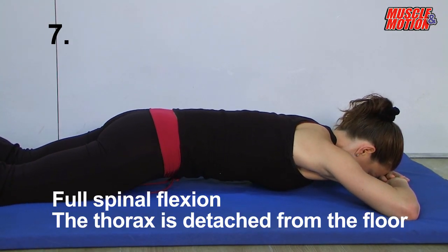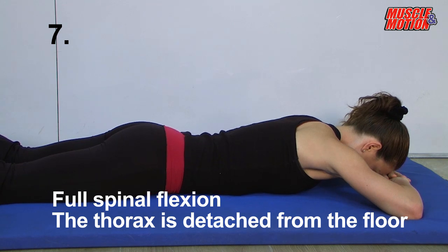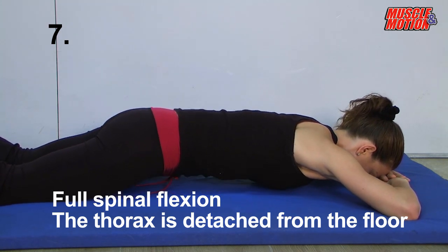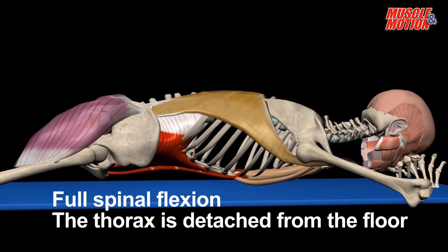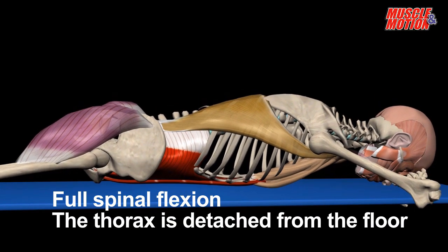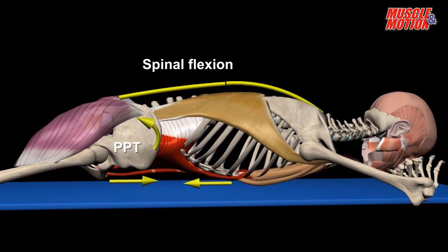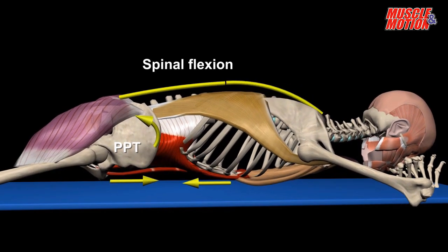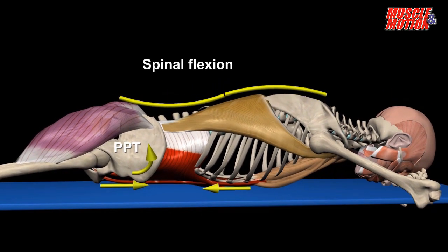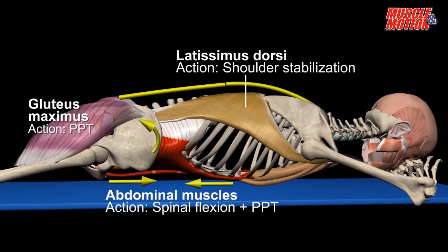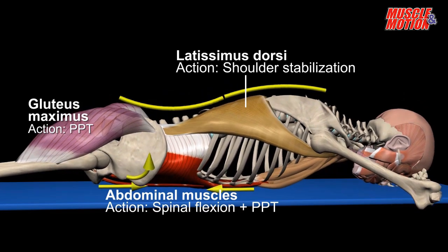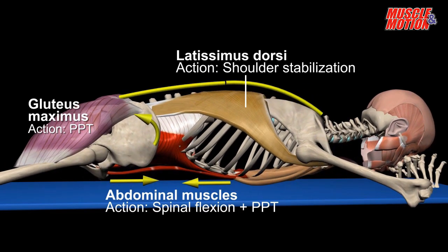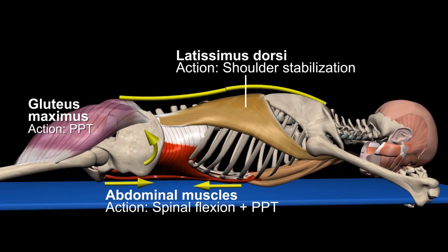Exercise 7: In this variation, we perform posterior pelvic tilt and lift the chest from the floor. In addition to exercising pelvic mobility, the load on the abdomen is high, and therefore this exercise can also be good for strengthening the abdominal muscles. In addition, we can see the other stabilizing muscles in light brown — among them, the latissimus dorsi and the pectorals.